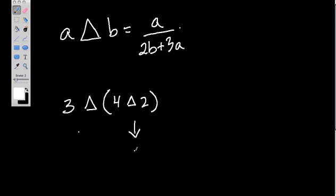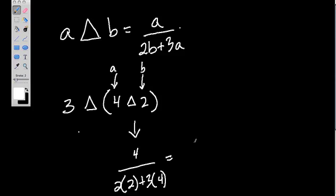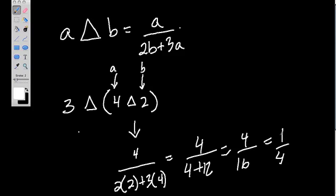So 4 triangle 2 would just become 4. That's A. In fact, I would probably even label it to keep track. Over 2 times 2, which is B, plus 3 times 4. This equals 4 over 4 plus 12, or 4 over 16, and that's 1 fourth.